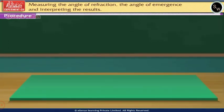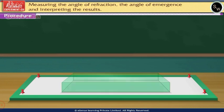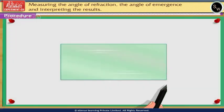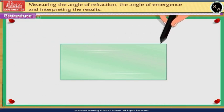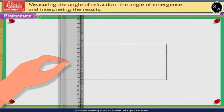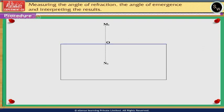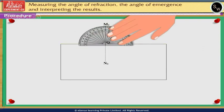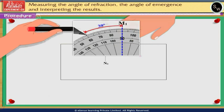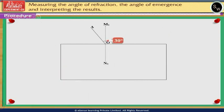First, fix the drawing paper on the drawing board with the help of drawing pins. Place the rectangular glass slab on it and mark its boundary with a sharp pencil. Remove the glass slab and using the protractor, draw a normal M1N1 at point O on the boundary. Draw a line AO making an angle of 30 degrees with the normal M1N1 using the protractor. This forms the angle of incidence i.